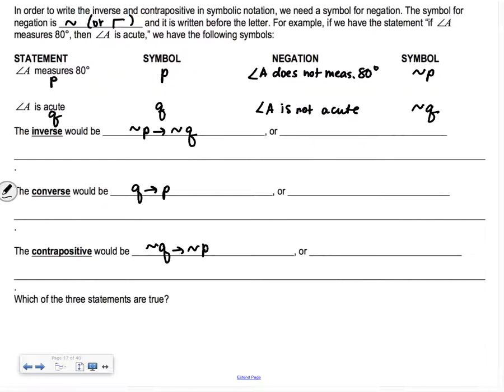The contrapositive would be not Q implies not P, which would be if angle A is not acute, then angle A does not measure 80 degrees. The converse for Q implies P would be if angle A is acute, then angle A measures 80, which is false. Remember the inverse and converse are the things that are false, and the contrapositive is true.